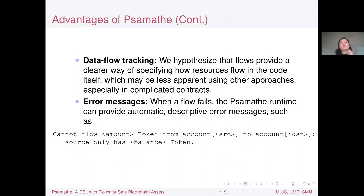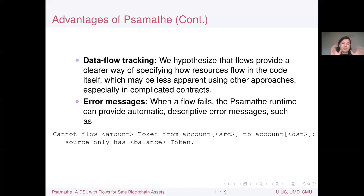As additional advantages, flows provide a clearer way of specifying how resources move in code, because the source, destination, filters, and transformations are all explicitly present in one place — rather than the imperative approach of separately removing, filtering, transforming, and adding values. For a similar reason, Samathi can automatically generate descriptive error messages, because it knows the source, destination, and what was supposed to be selected — not just 'underflow' or 'overflow', but something like 'there weren't enough tokens to send here.'